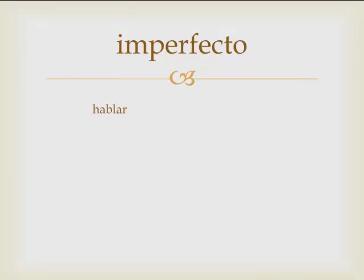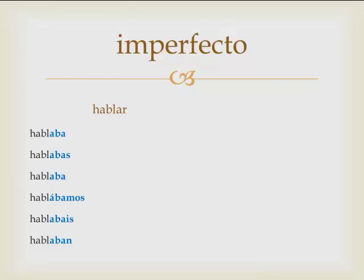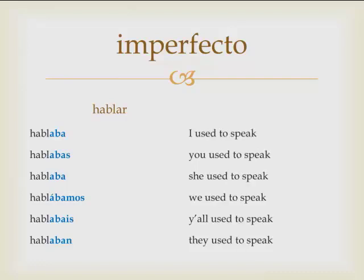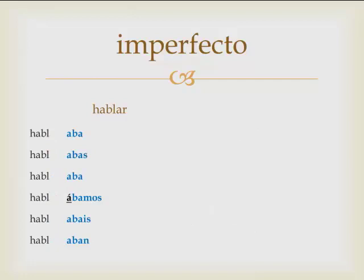Let's look at hablar in the imperfecto. The stem is going to be regular, as it always is. The endings for the imperfecto are: aba, abas, aba, ábamos, abais, and aban. We would translate this conjugation into English as: I was speaking, you were speaking, she was speaking, we were speaking, y'all were speaking, or they were speaking. Another way to translate that would be: I used to speak, you used to speak, all the way through the list. Note that ábamos has an accent over the first a.